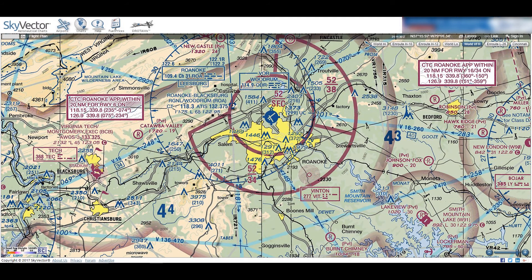The next item are congested areas, which are marked on the map with these bright yellow areas. Congested areas are built-up, highly populated areas such as towns, cities, or large universities. We are allowed to fly in congested areas, but it may be more difficult since we are not allowed to fly over other people.